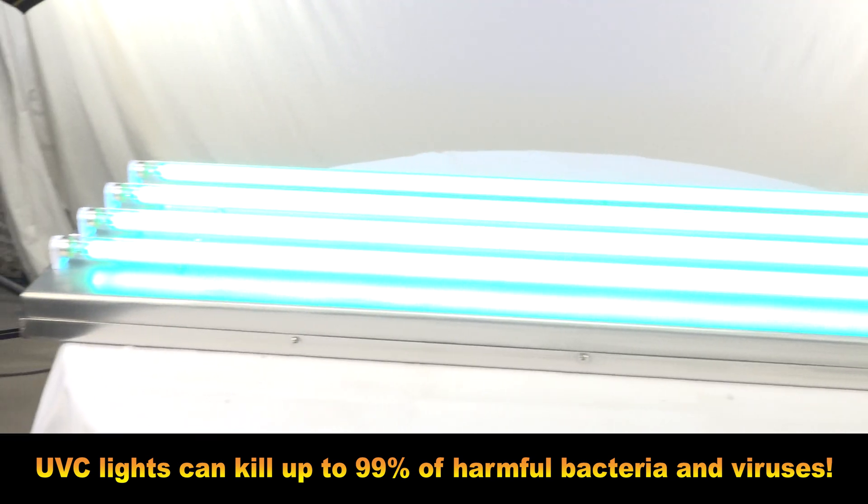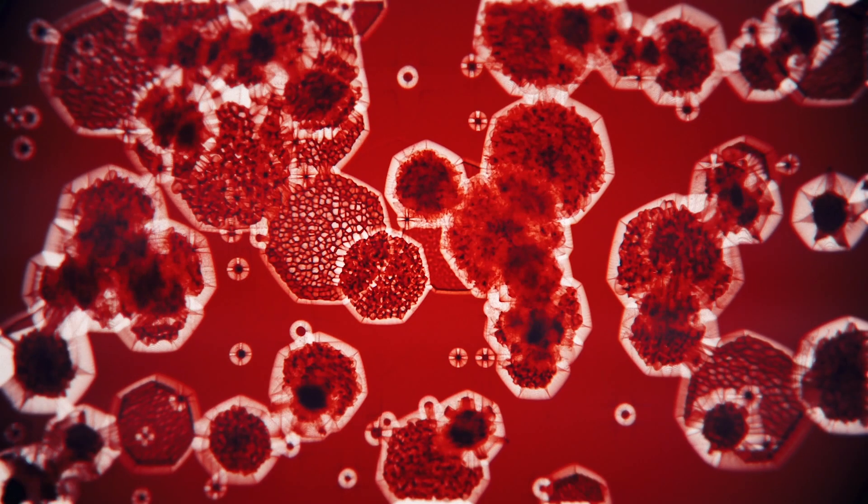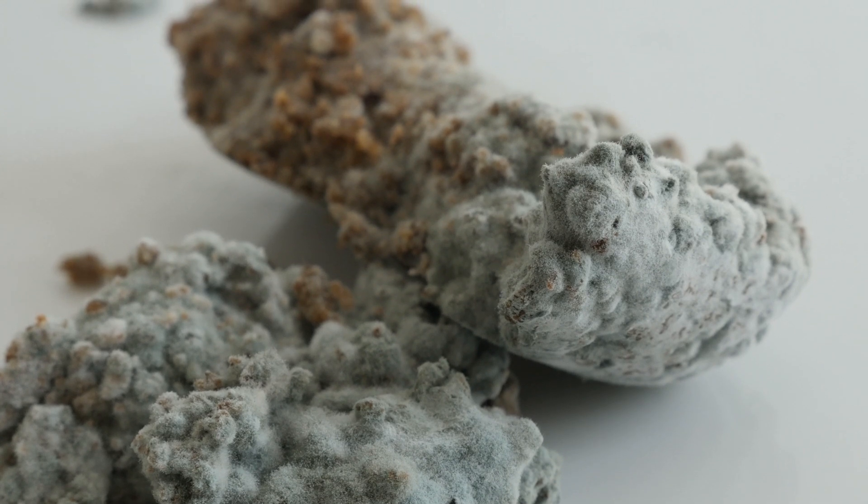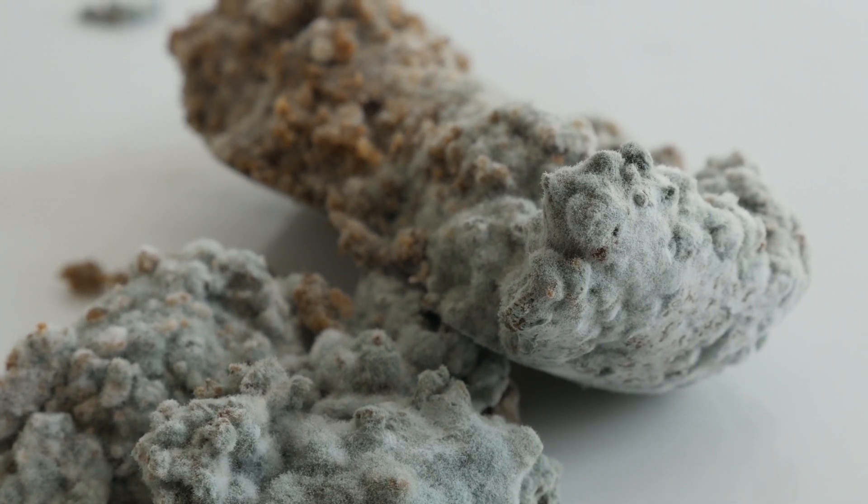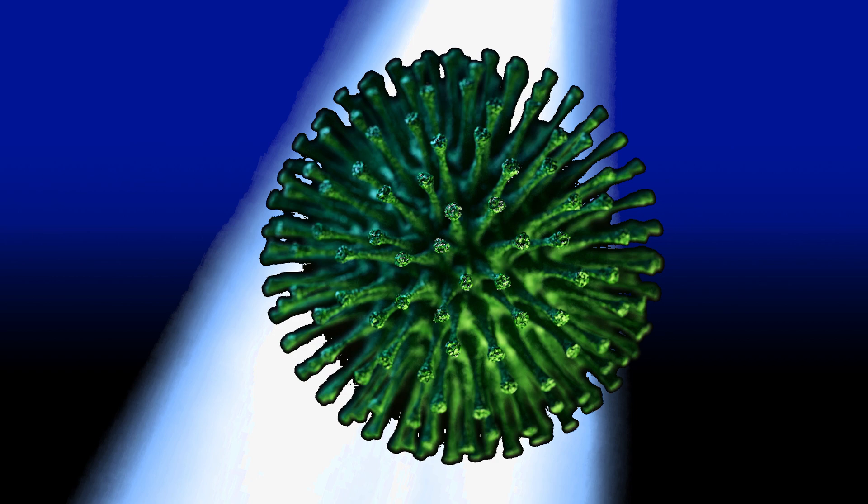UV light is a powerful sanitation solution against viruses, bacteria, mold, and spores. This disinfection method does not require direct contact with the surface or object, making the process easy to implement in buildings.